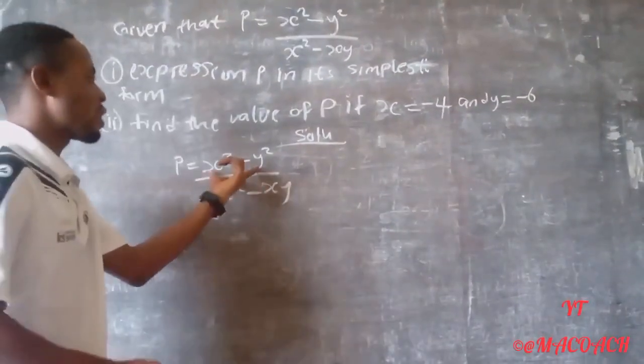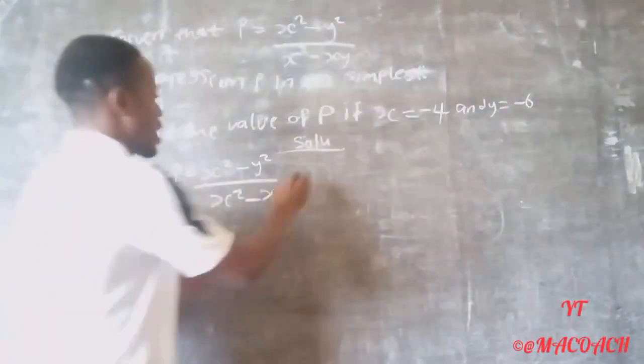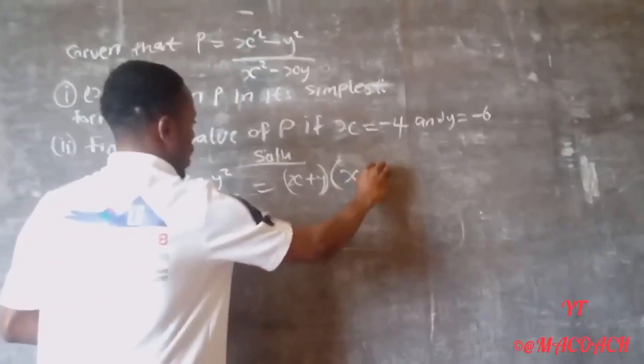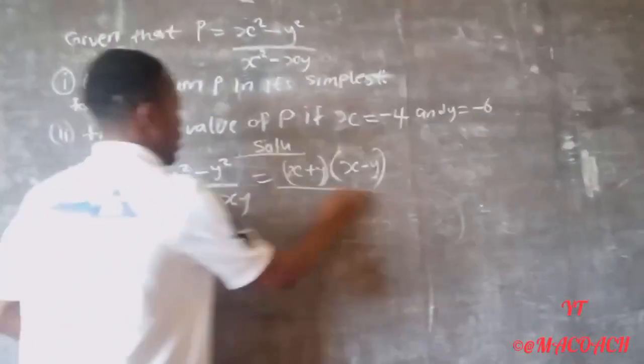This numerator is a difference of two squares. So this becomes S plus Y in brackets times S minus Y in brackets, divided by the denominator.